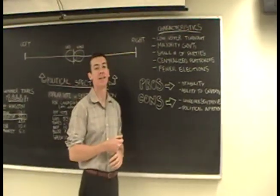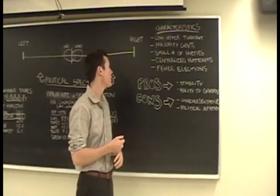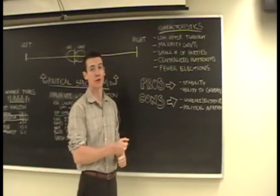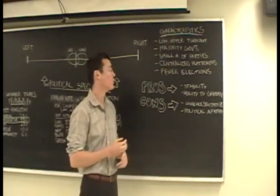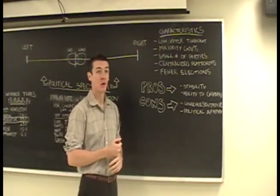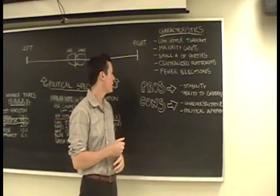Okay, so let's go over some of the key characteristics of the first-past-the-post system. A, you have low voter turnout. People don't think that their vote really counts as much. B, you have majority governments. You tend to have a lot more in this system than any other because of the small number of parties.